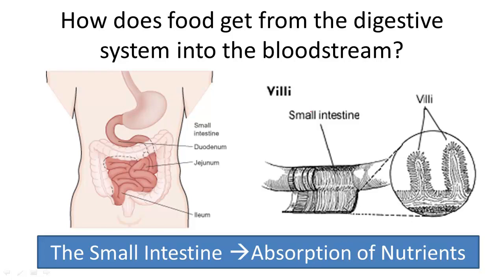What is the absorption of nutrients, and how does it work in the body? A key part of the digestive system is to absorb nutrients, such as carbohydrates, proteins, and fats, from the digestive tract into the bloodstream.